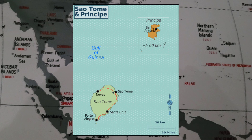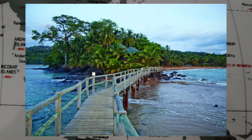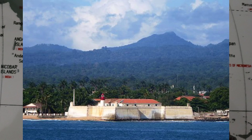São Tomé and Príncipe is a small island nation located off the west coast of Africa, in the Gulf of Guinea. It is composed of two main islands, São Tomé and Príncipe, and several smaller islands. Located in the equatorial zone, it has a tropical climate. The country's economy is largely based on agriculture, with crops such as cocoa, coffee, and palm oil being important exports. The country has a total area of 1,001 square kilometers or 386 square miles, with a population of over 223,000.